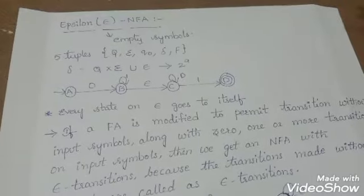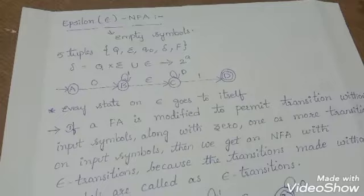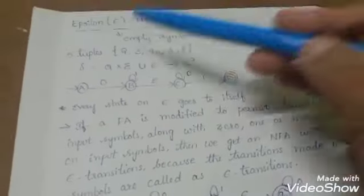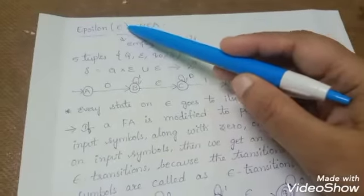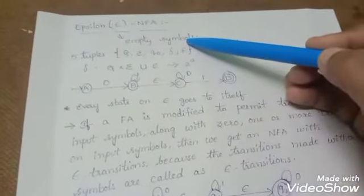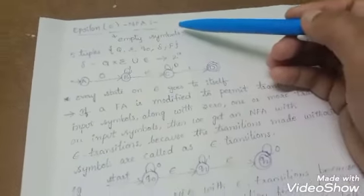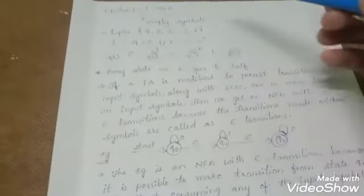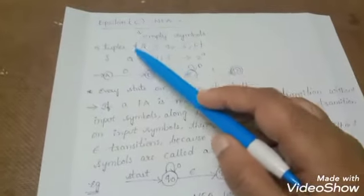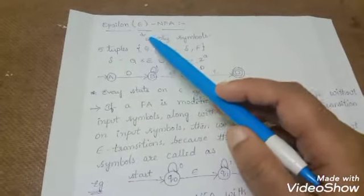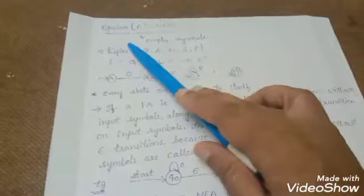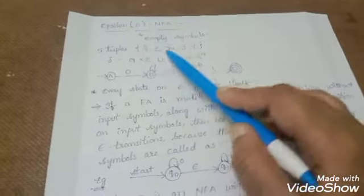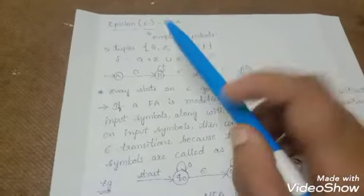Hello everyone, in today's video we'll see epsilon NFA. Here this epsilon is indicating empty symbols. So in epsilon NFA, it also has five tuples same like DFA and NFA.